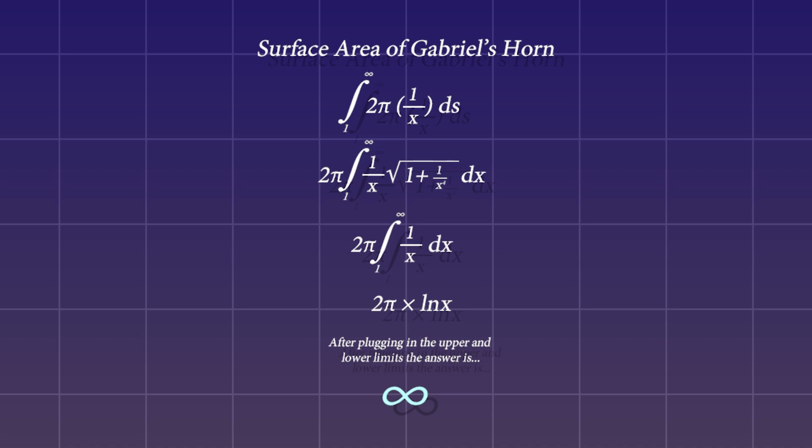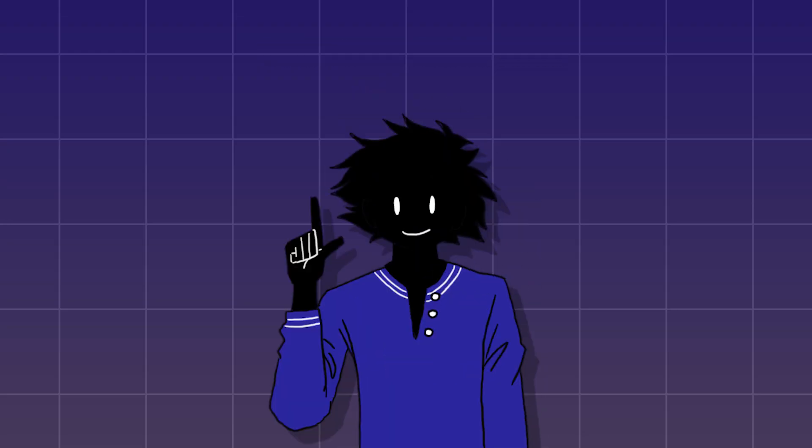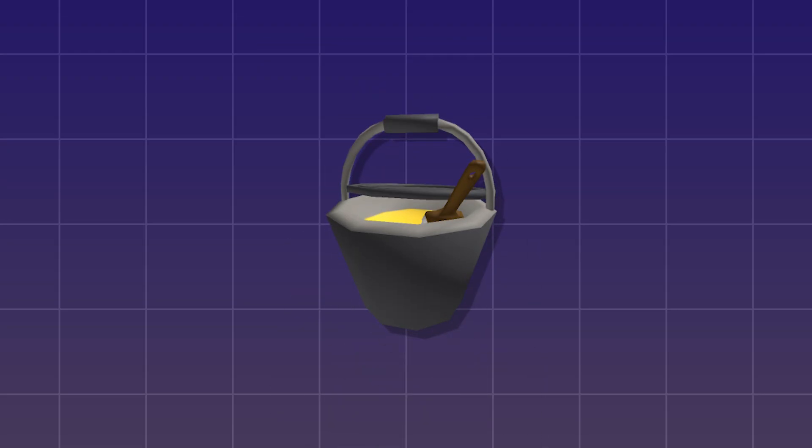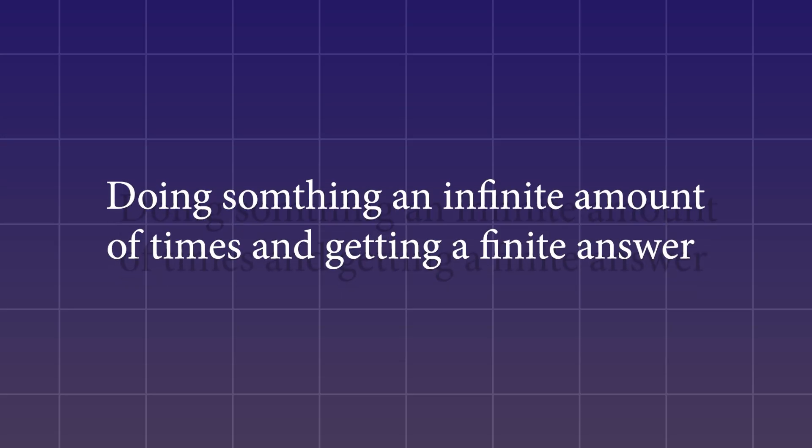However, if you calculate the surface area of the horn, which also involves integrating, you'll find that the answer that you get is infinity. So you have a shape with a finite volume, but an infinite surface area. That's like being able to completely fill a paint bucket with paint and never having enough paint on planet Earth to paint the outside of it. But that's what calculus is all about, doing something an infinite amount of times and getting a finite answer.